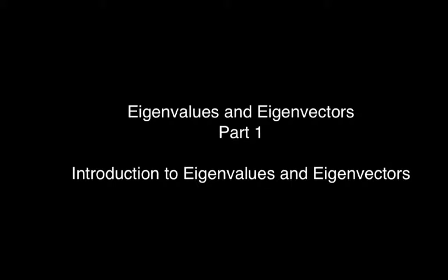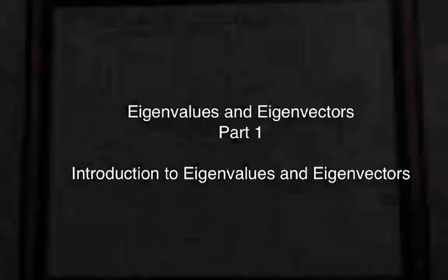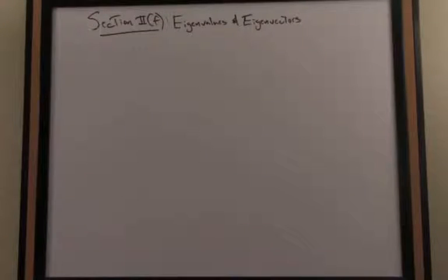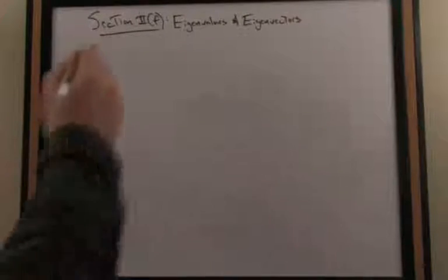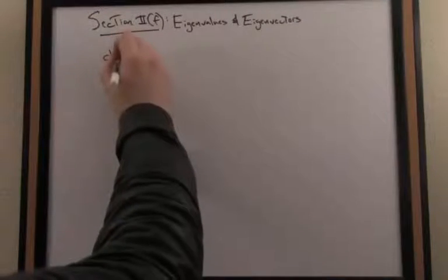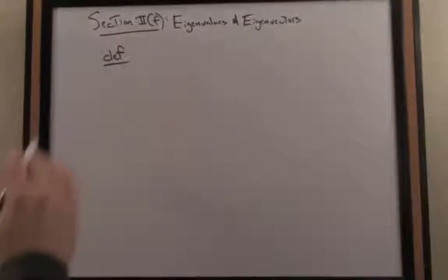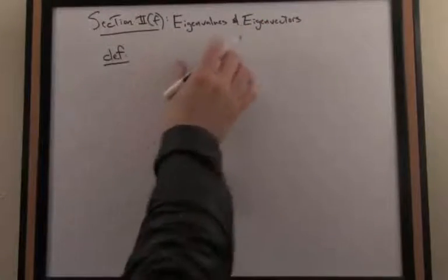If I'm given a square matrix A, an eigenvector associated with that matrix is a vector so that when I multiply the vector by A, the effect of multiplication is a scaling of that eigenvector.